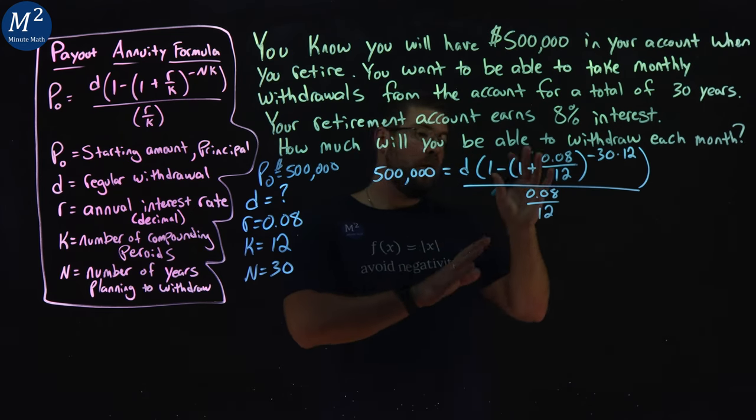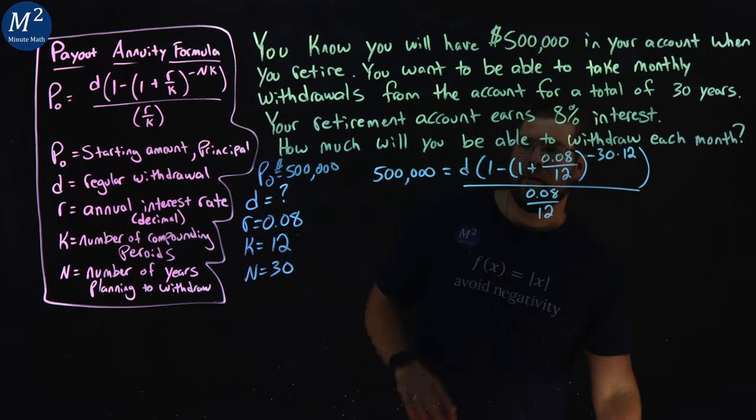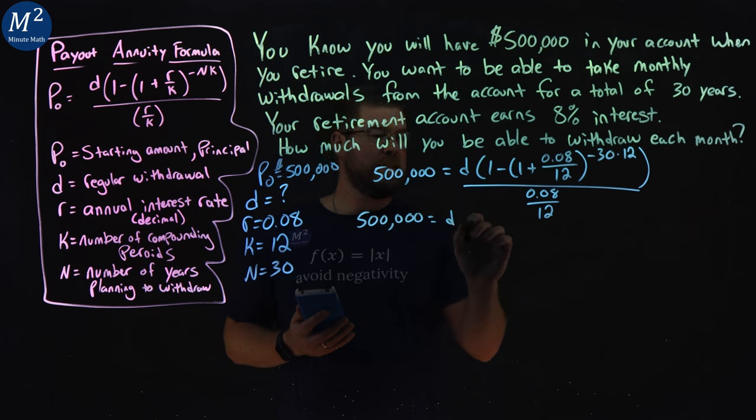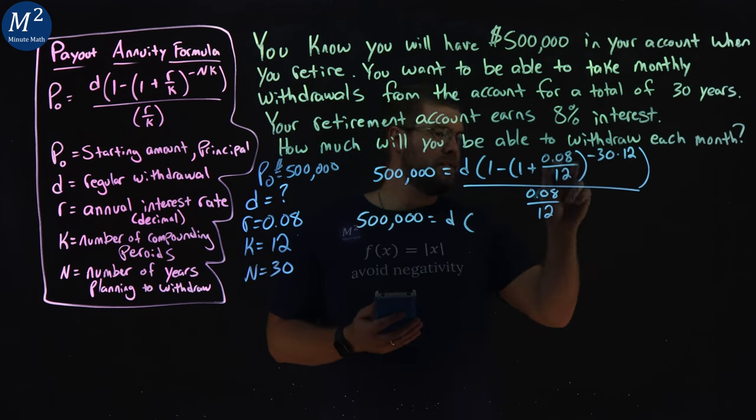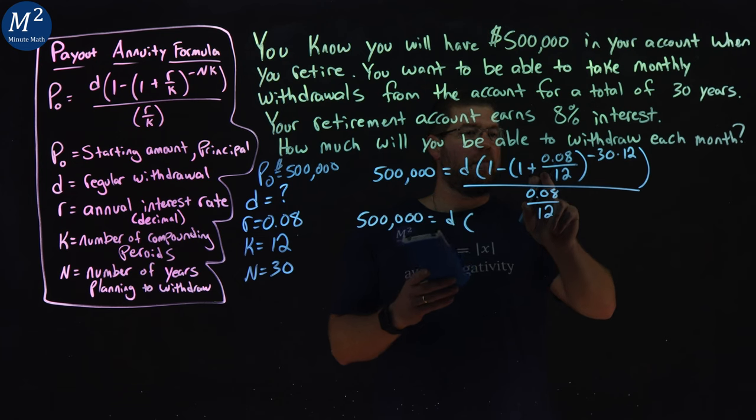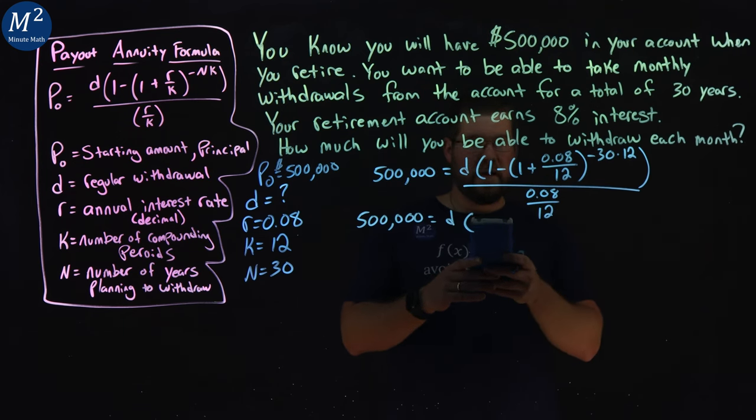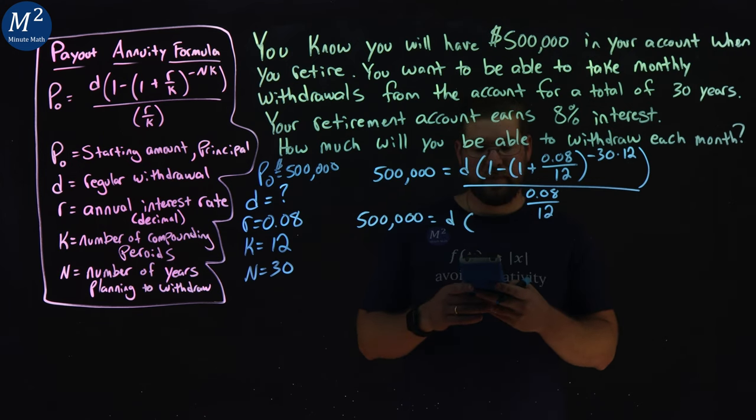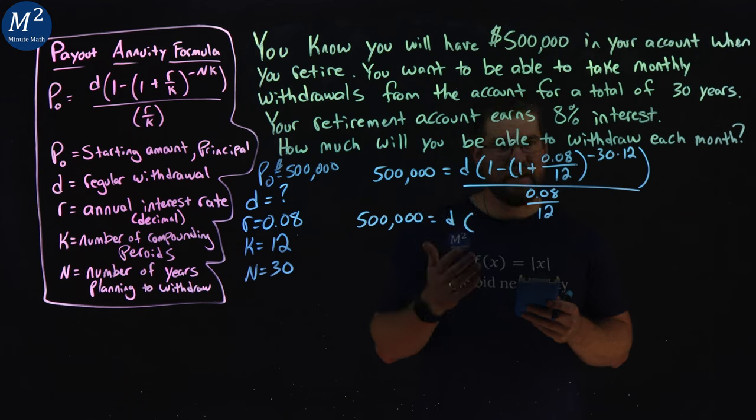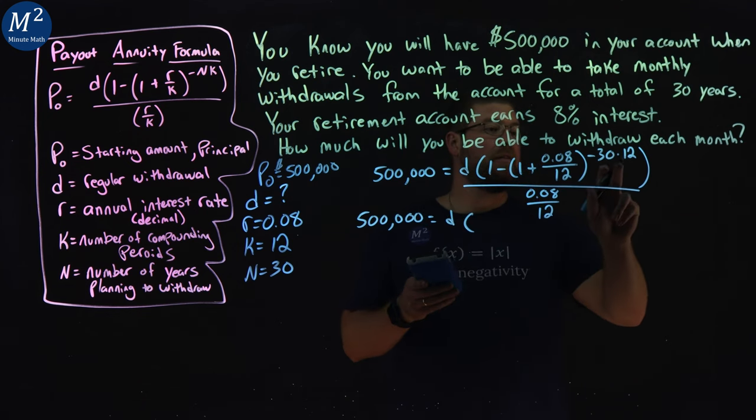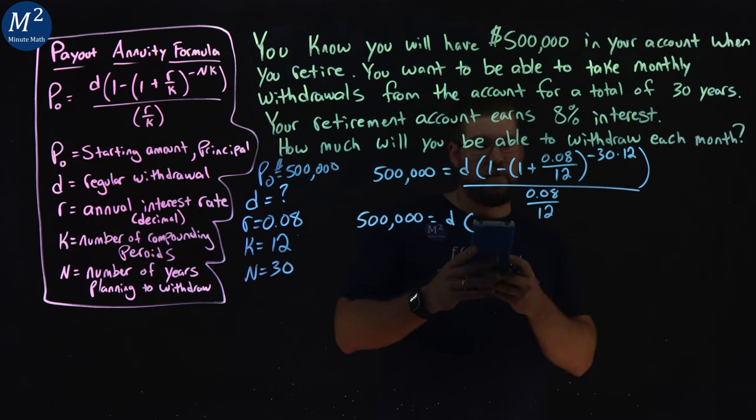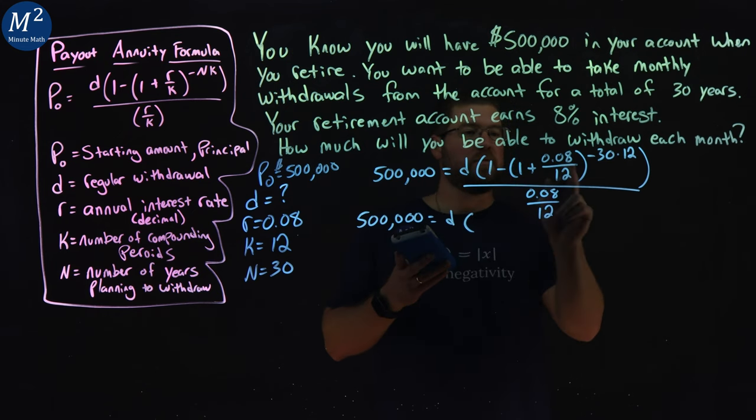Now, I'm going to simplify what I can on the right-hand side here before I bring it over to the left. We still have 500,000 equals D, and this whole numerator, the rest of it, I'm going to multiply that part out. I'm going to first do 0.08 divided by 12, and that's 0.06 repeating. Let's add 1 to that, and that's 1.006 repeating. I'm then going to raise that to a negative 30 times 12.